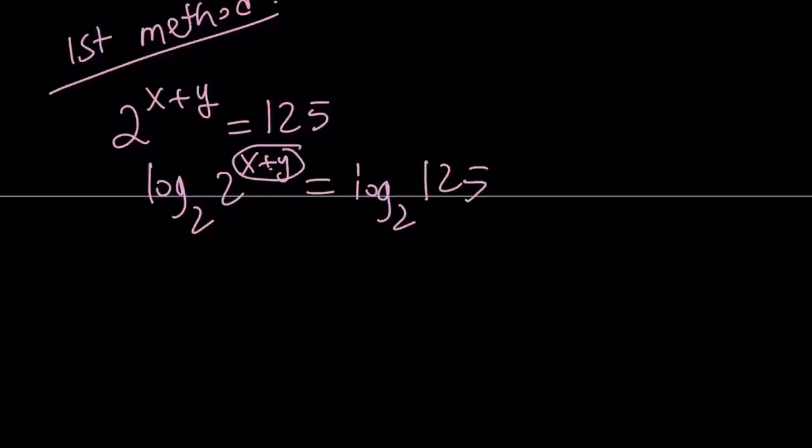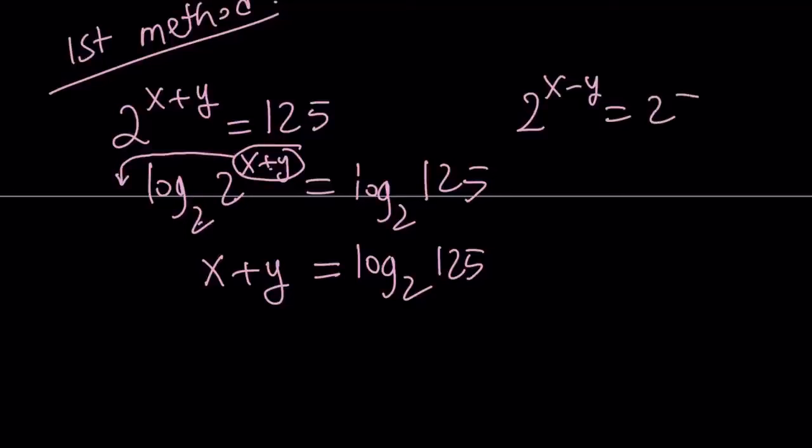And then the log and the exponent are actually going to cancel out. Log 2 with base 2 is going to be 1. x plus y is going to be log 125 base 2. And similarly, we can write x minus y as log 25 with base 2 again.